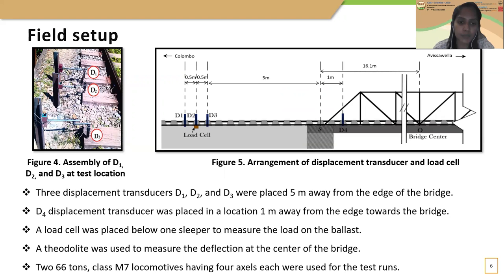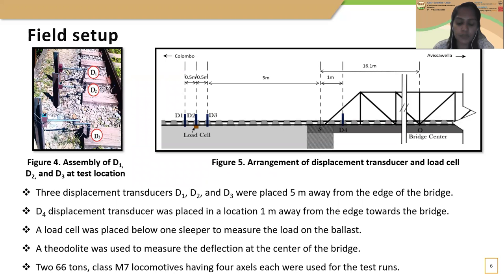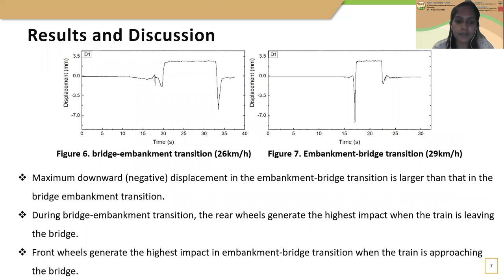The total span of the bridge is 32.2 meters and it is supported at the ends by two brick abutments. Three displacement transducers D1, D2, and D3 were placed five meters away from the edge of the bridge, and a fourth transducer D4 was placed one meter away from the edge towards the bridge. A load cell was placed below one sleeper to measure the load on the ballast, and a theodolite was used to measure the deflection at the center of the bridge. Two 66-ton class M7 locomotives each having four axles were used for the test runs.